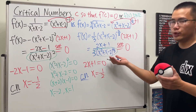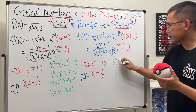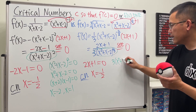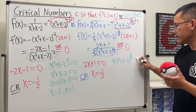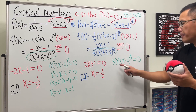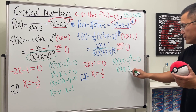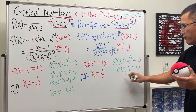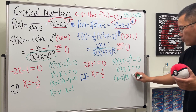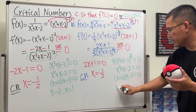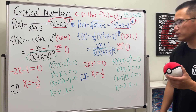For the second function, setting 3 times (x² + x - 2) to the 2/3 equal to zero, we again look at the inside: x² + x - 2 = 0. Factoring gives (x + 2)(x - 1) = 0, so x = negative 2 and x = positive 1 — the same answers.